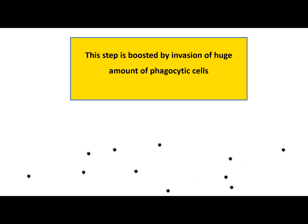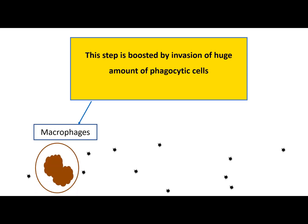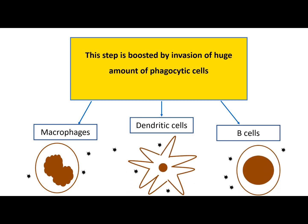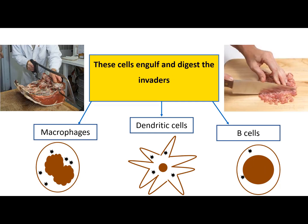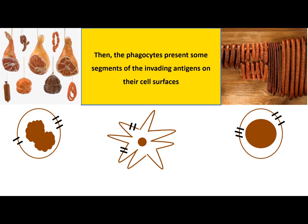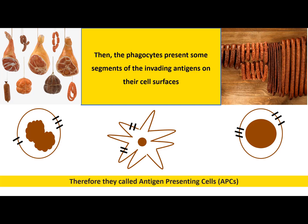The neutrophil's phagocytosis step is boosted by an invasion of huge amounts of other phagocytic cells, such as macrophages, dendritic cells, and B cells. These cells engulf and digest the invaders. Then, the phagocytes present some segments of the invading antigens on their cell surfaces. Therefore, they are called antigen-presenting cells, APCs.